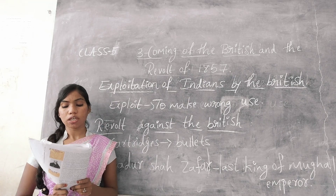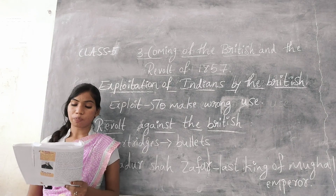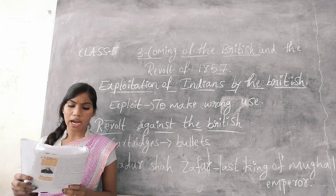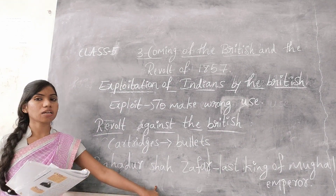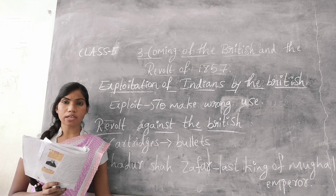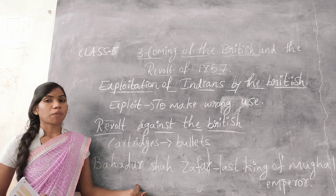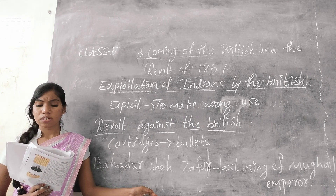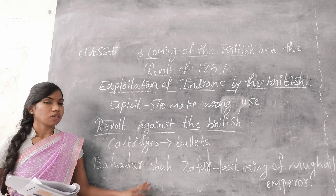The British had better trained soldiers and superior weapons. Also, some Indian rulers secretly helped the British. Bahadur Shah Zafar was arrested and exiled to Burma, where he died. His two sons were also killed.